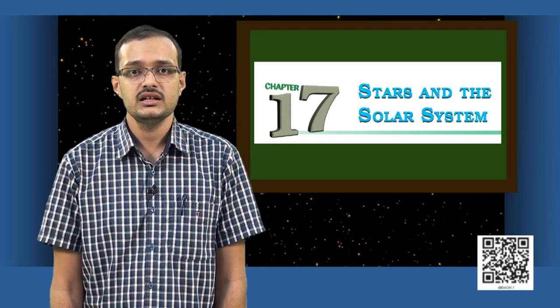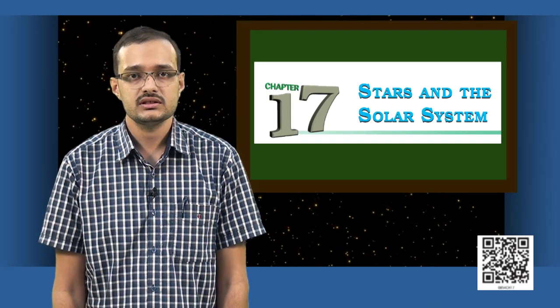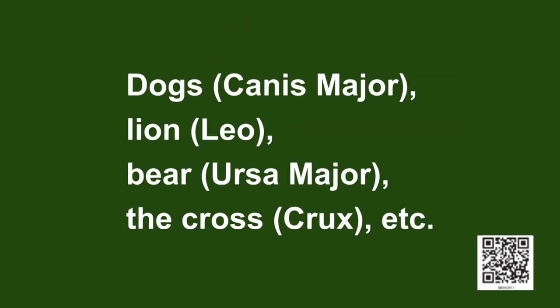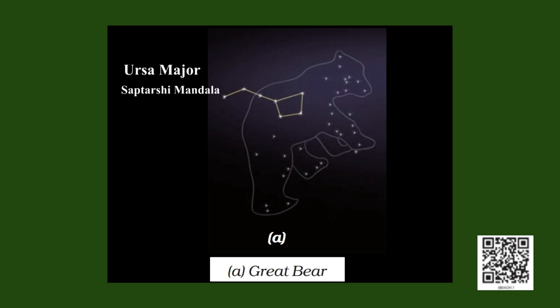Our ancestors found that some of these stars always appear in a particular group forming a constellation. And these constellations resembled everyday objects or animals like the dog, lion, bear, the cross, etc. They hence named these constellations based on how they appear. They also named the stars present in these constellations. However, the names depended on which civilization these people belong to. For example, the Romans called the bear Ursa Major. We Indians called it the Saptarshi Mandala.